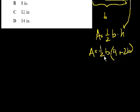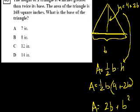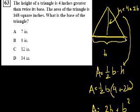If we distribute the 1/2 b, we get area equals 1/2 b times 4 equals 2b, and 1/2 b times 2b is plus b squared. 1/2 times 2 is 1, and b times b is b squared. They tell us the area is 168.